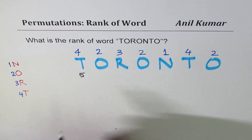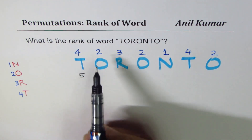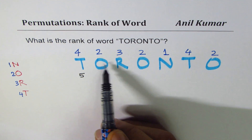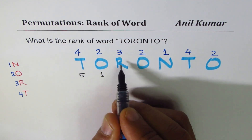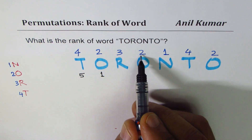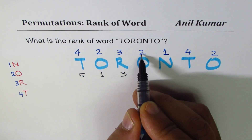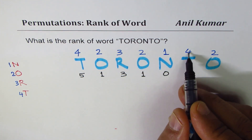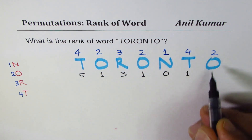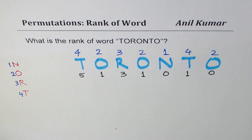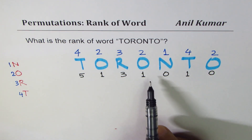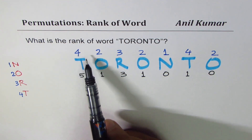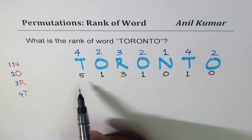We continue this procedure for each letter. To the right of O, there is only 1 letter (N) with a number less than 2, so we write 1. For R (which is 3), there are 3 letters with numbers less than 3, so we write 3. Less than 2 gives 1. Less than 1 gives 0. The last letter always gets 0. This completes the first step.